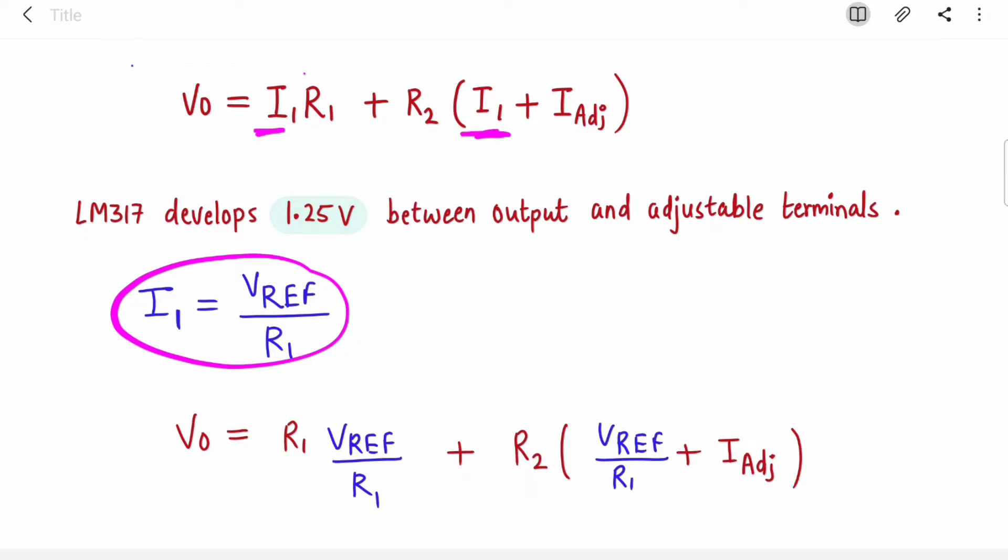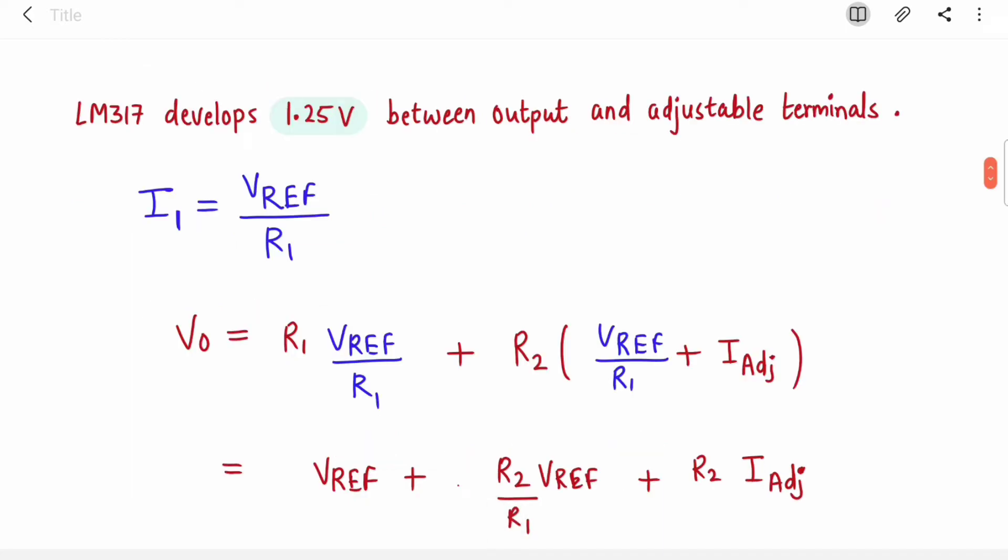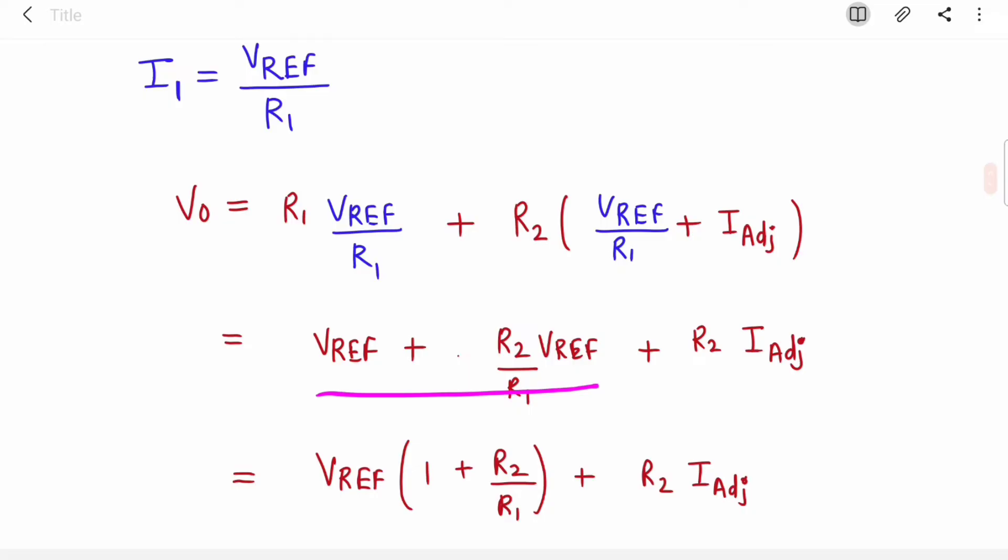I substituted the I1 value. Now I will replace V_ref with 1.25, but let's continue with the generic term V_ref. This R1 will be cancelled. Open the bracket and expand it. V_ref is common in these two terms, so take it out. It becomes 1 + R2/R1, plus the I_adj·R2 term.